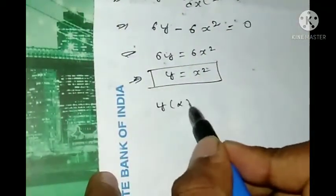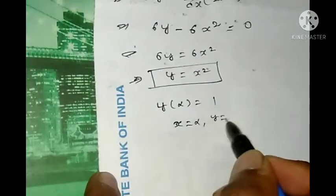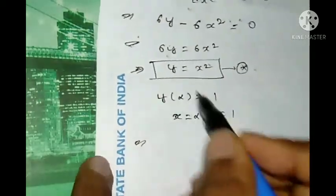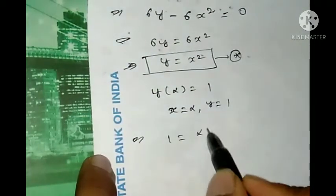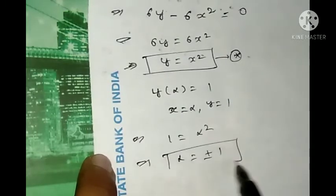y(α) = 1 means x = α and y = 1. Therefore, substituting these values in this equation, 1 = α², which means α = ±1. This is the required answer.